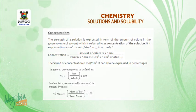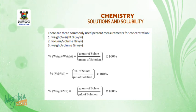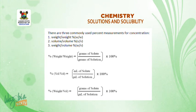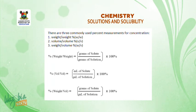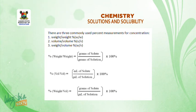There are three commonly used percent measurements for concentration: one, weight per weight (w/w) — grams of solute over grams of solution times 100%; two, volume per volume (v/v) — volume of solute over volume of solution times 100%; three, weight per volume (w/v) — grams of solute over volume of solution.